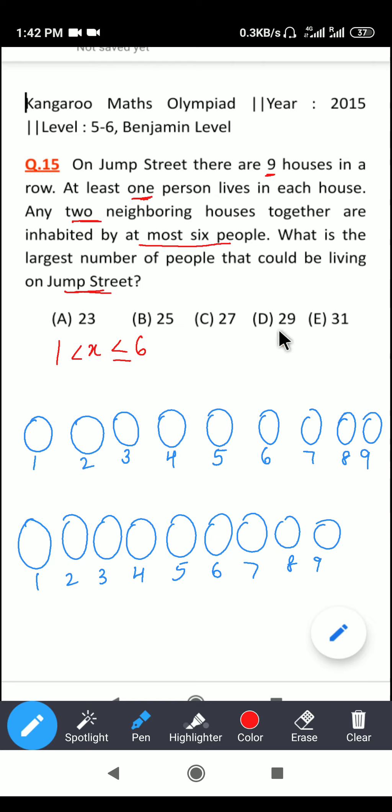So what I have done is I have just made these nine houses, the circles, and let's begin. So what does it mean is that at least one person lives in each house and any two neighboring houses together are inhabited by at most six people.